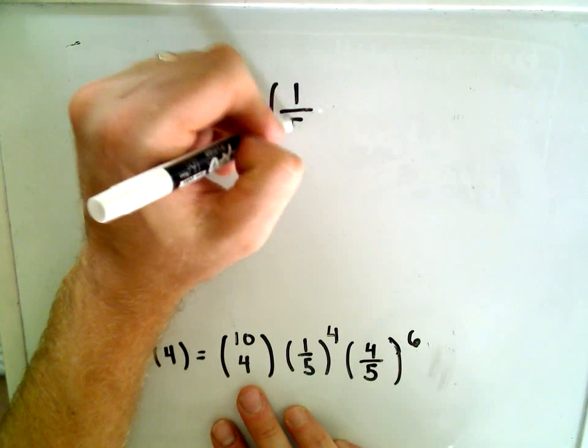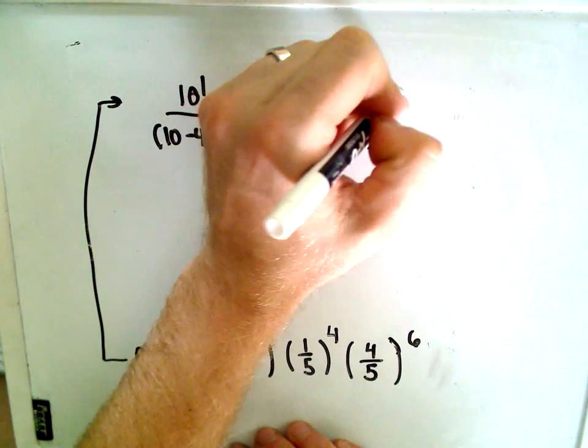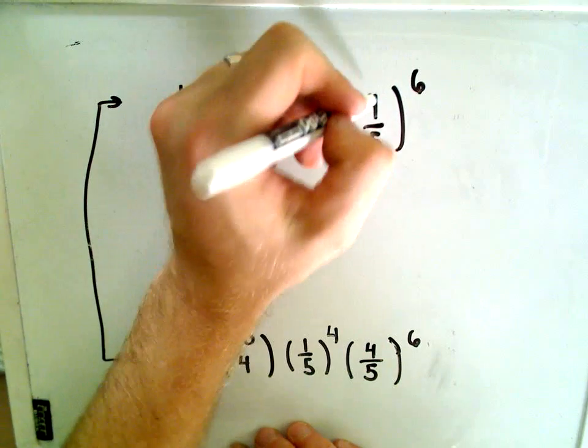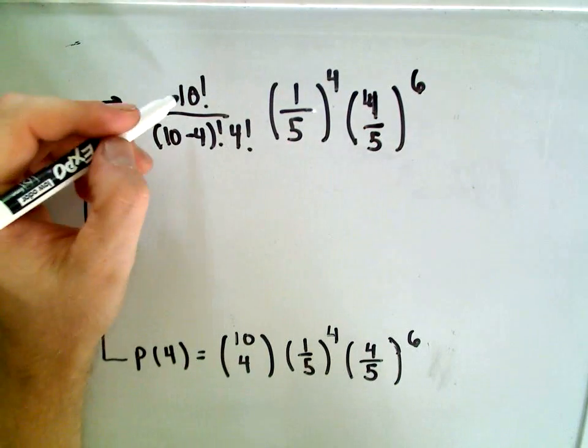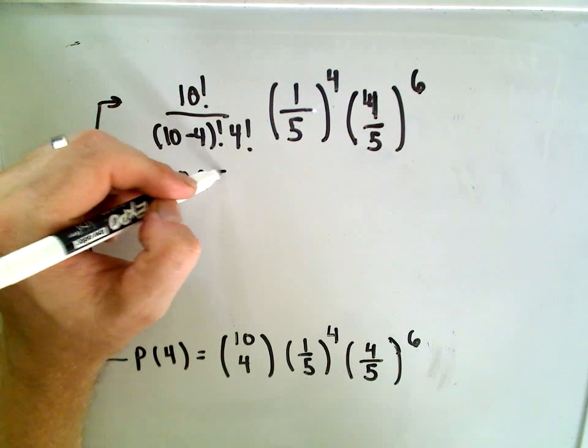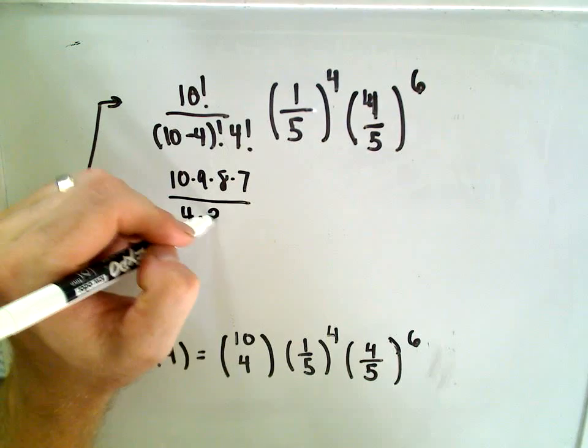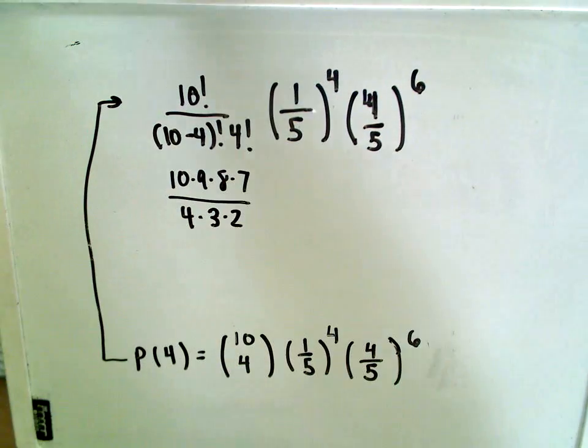Again, we have one over five raised to the fourth power. We have four over five, raised to the sixth power. So let's see, this is ten factorial over six factorial, so that will cancel out. I'll leave with ten times nine times eight times seven, four factorial. Well, that's four times three times two.